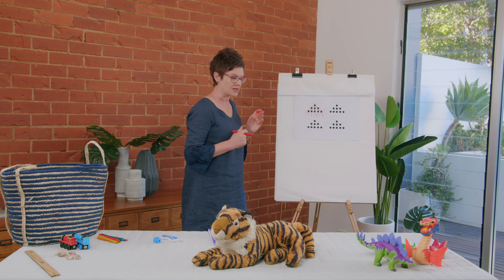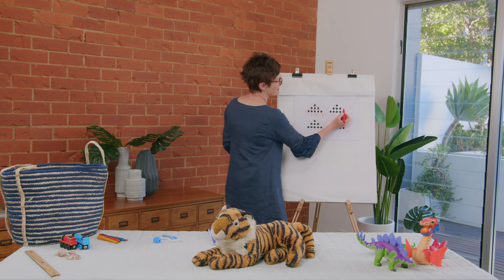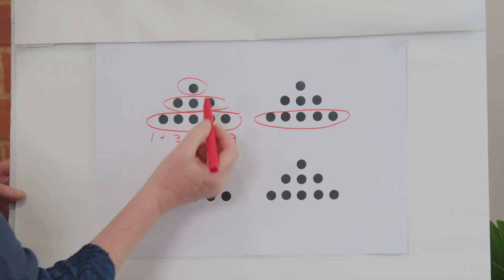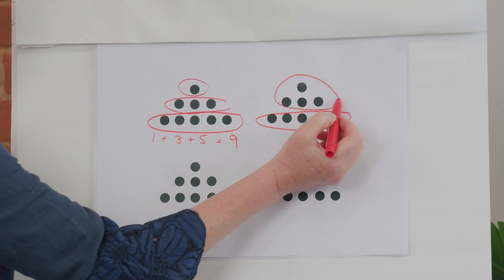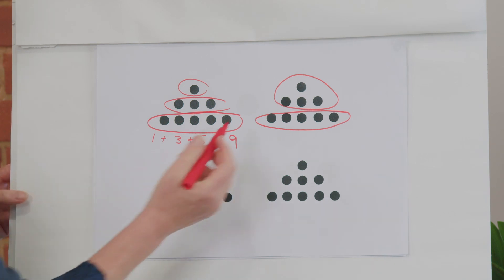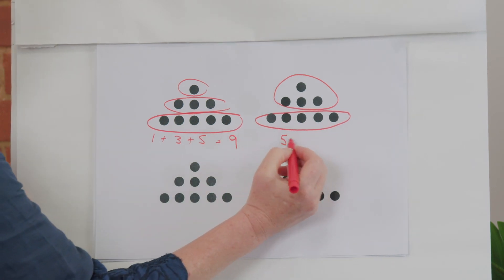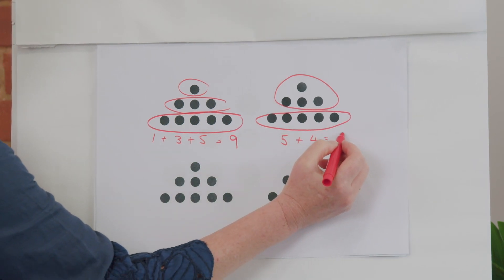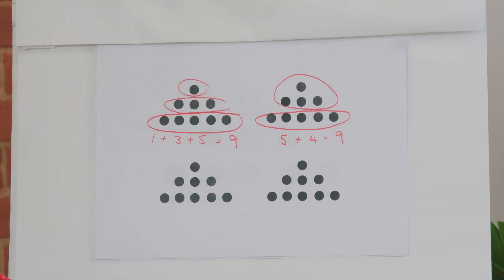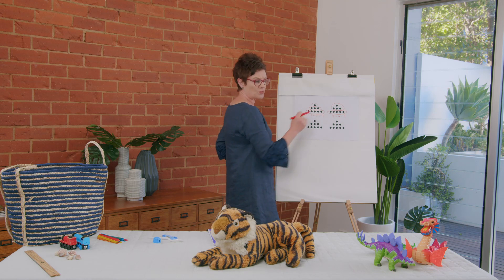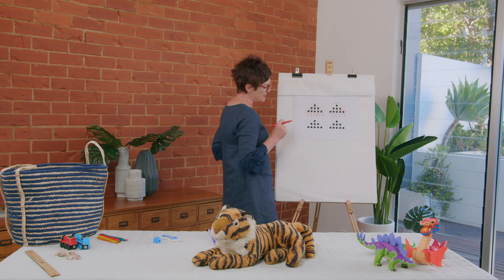Here's another way of looking at the subitized amounts. Instead of breaking them into three sections, I might have seen them as a five and a four — five plus four. We're going to get the same number each time because they are the same amounts. That's two different ways we can subitize these dots.